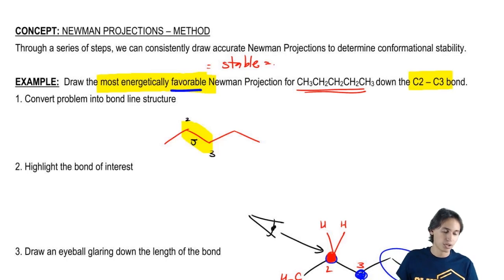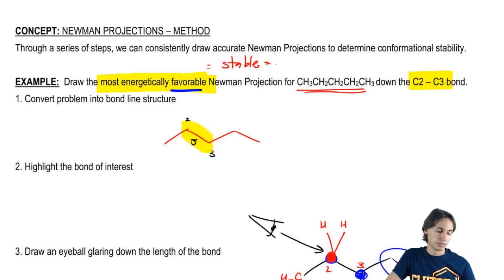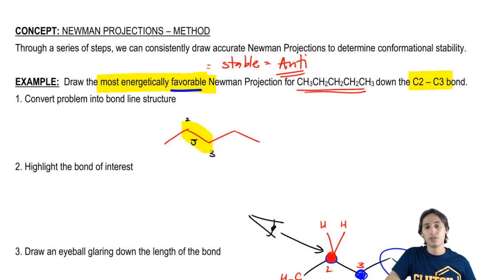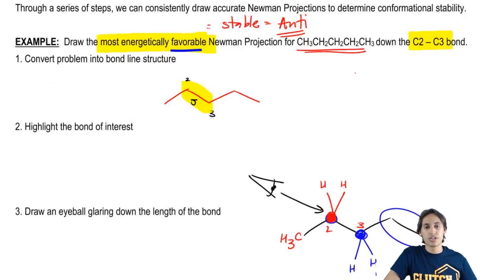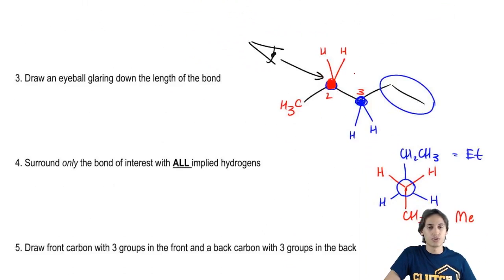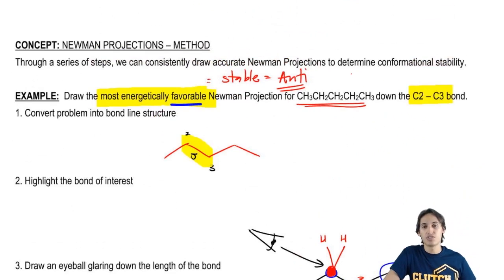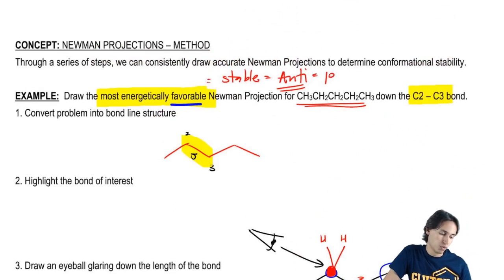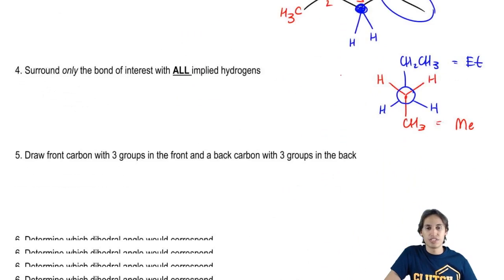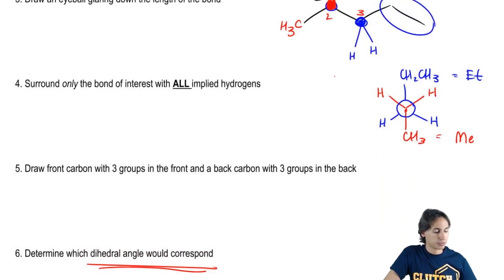What is the most stable conformation? That's going to be anti. Anti is the most stable. So let's go down and see if that's what I drew. And the dihedral angle for anti, by the way, is 180 degrees.